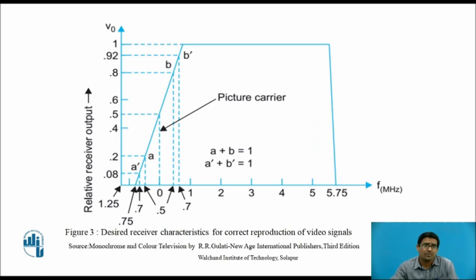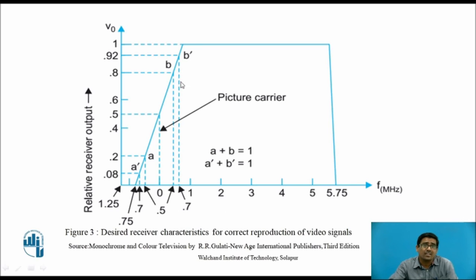Figure three shows the desired receiver characteristics for correct reproduction of video signals. This figure plots relative receiver output versus frequency. It linearly increases up to 1 volt, after which it is constant. To prove that the vestigial sideband response is linear, we use the mathematical condition: if a + b = 1 and a' + b' = 1.